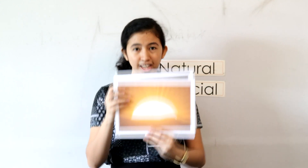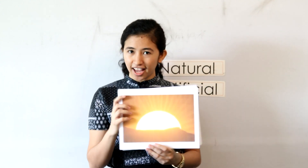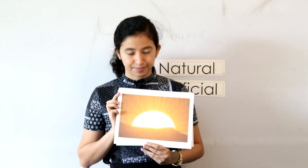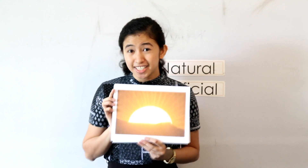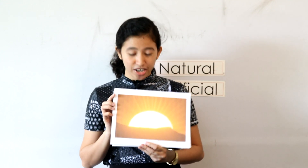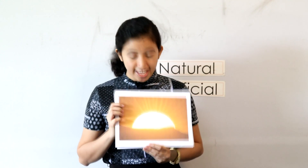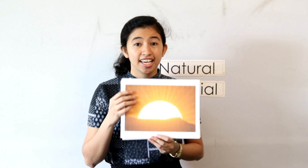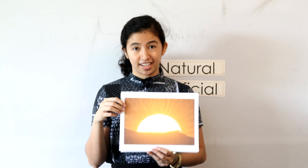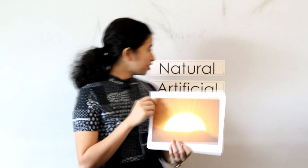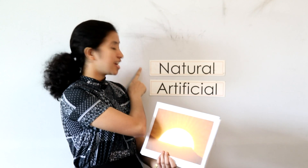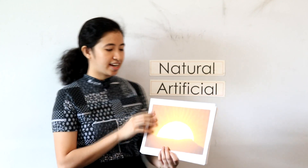And what is this light? When do we see this? In the morning. This is the sun. Who made the sun? It is God. Therefore, it is natural light.